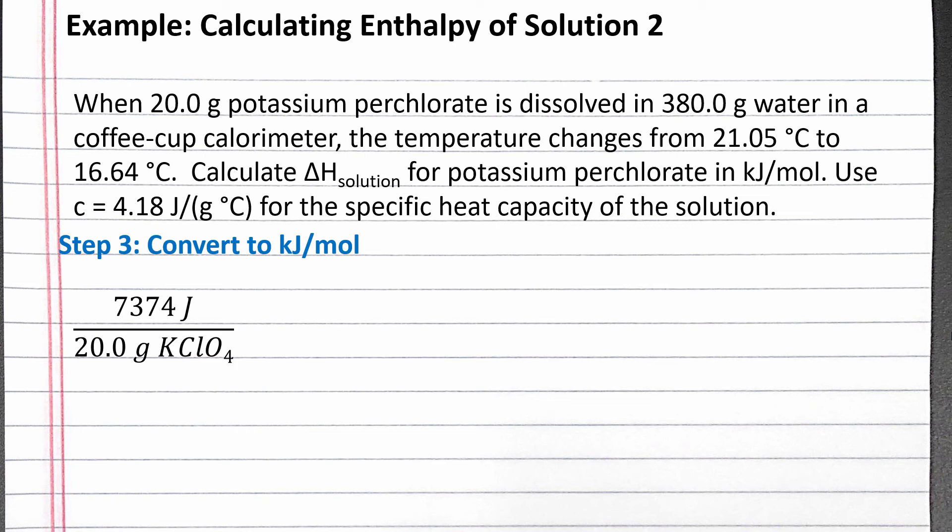which is positive 7,374 joules per 20.0 grams of potassium perchlorate. We convert from joules to kilojoules using the definition of kilo, and use the molar mass of potassium perchlorate to convert from grams to moles.